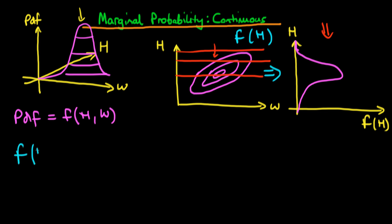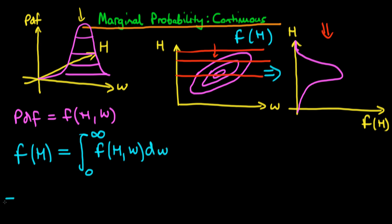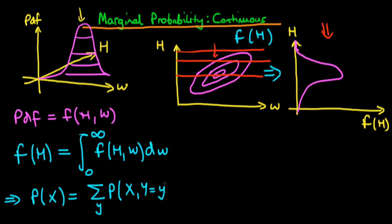In mathematical form, to get just a function of h — a probability density defined irrespective of weight — all we need to do is integrate across all possible values of weight our original two-dimensional probability density function. We integrate f of height and weight across all values of weight. This is the continuous analog of what we did in the discrete case: to get the marginal probability of a random variable x, we sum across all values of y the probability of x across all potential values of y. The integral is just the continuous analog of that sum.